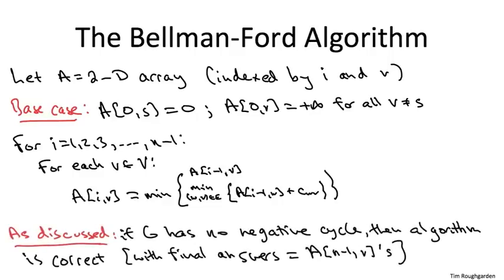And as we've discussed, if it just so happens that the input graph G has no negative cycles, then this algorithm will indeed terminate with the correct shortest paths from S to all of the destinations. Those answers will be lying in wait for you in the biggest subproblems, the A, N minus one, V's.